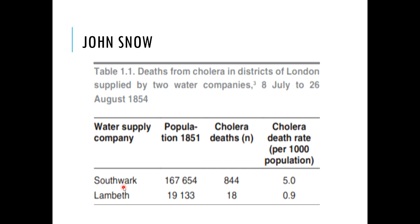He calculated death rate per thousand population, compared the rates, and made a conclusion that something was wrong with this water company. He postulated that there must be some invisible bacteria or agent infecting the water and causing disease in this specific population. He switched the water supply and the number of cases were drastically reduced. By simple observation and calculating the mortality rate, he made a solution and reduced the mortality rate in that area. He is known as the father of epidemiology because he was the first scientist or doctor who actually collected data and made decisions on the basis of data. And today, we all follow John Snow — we collect data, analyze it, and then make decisions.